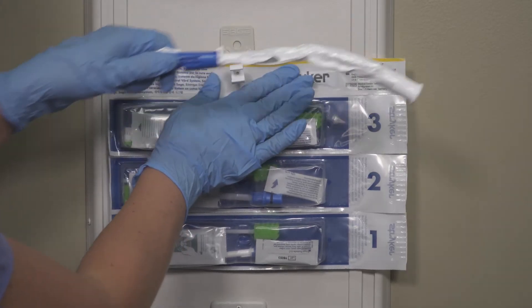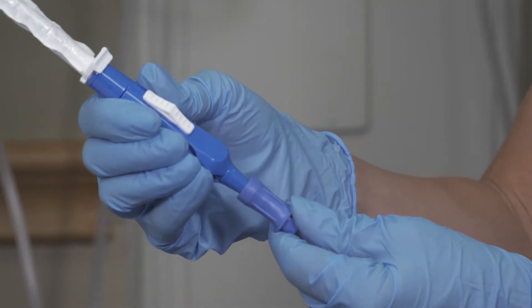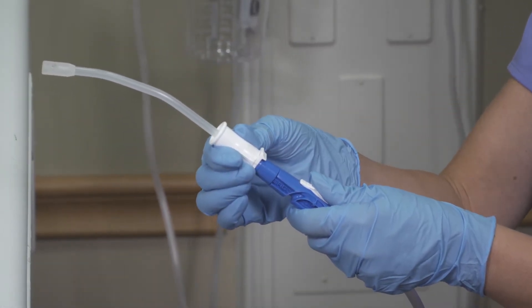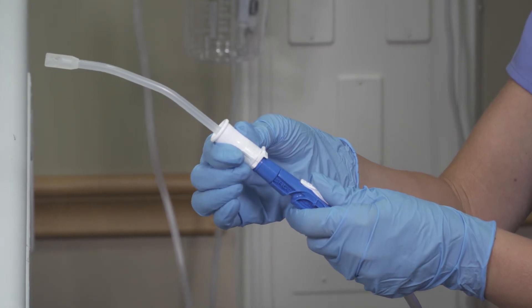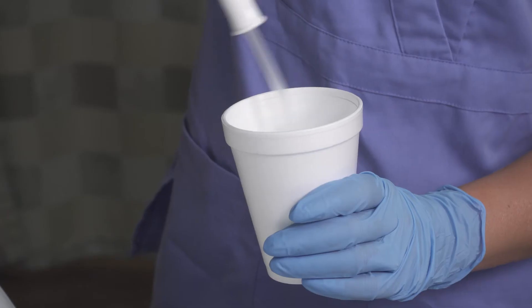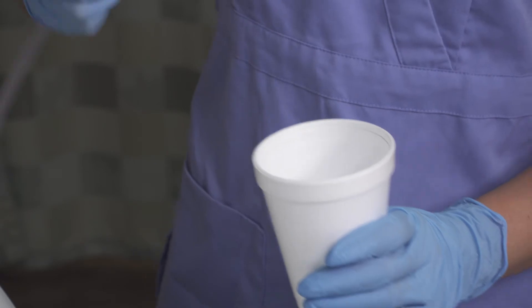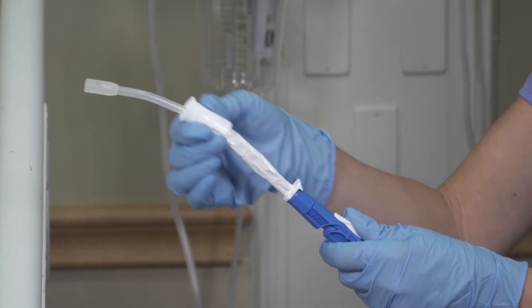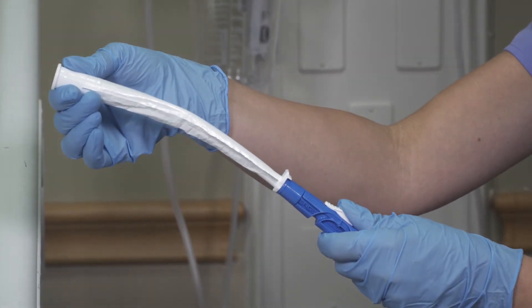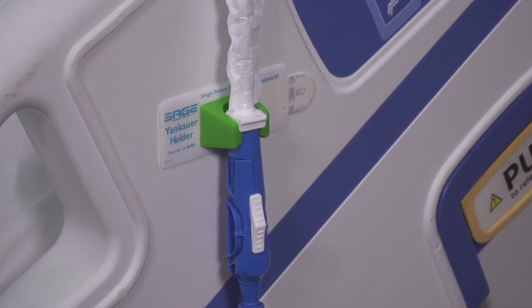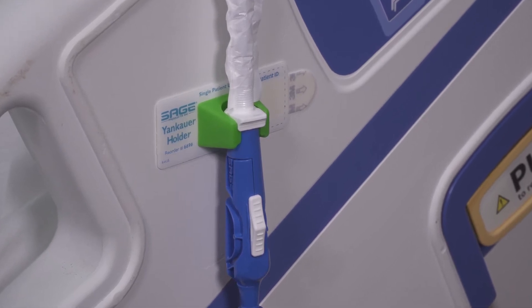Detach the covered yankauer and connect it to the tubing. To use the covered yankauer for removing oral debris and secretions retract the sleeve all the way down until the cap locks in place. Slide the switch to the on position. After each use rinse to clear the line. When finished slide the suction switch to off and pull the sleeve up over the tip. Keep the yankauer attached to the suction line except when using other suction tools and store when not in use.